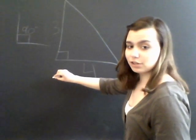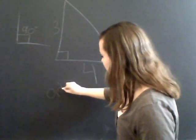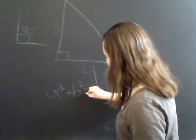The Pythagorean Theorem is an equation. All you have to do is A squared plus B squared equals C squared.